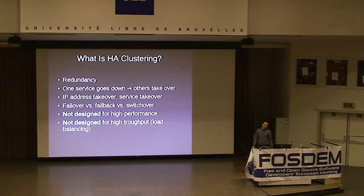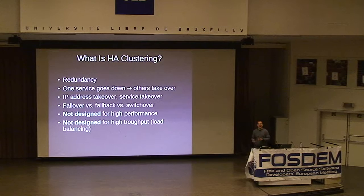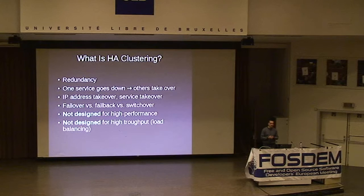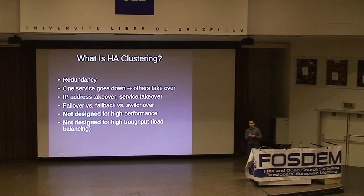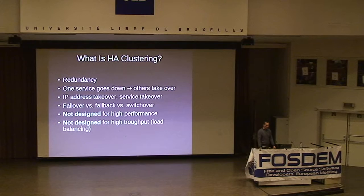We'll be talking about high availability clustering, which means providing redundant components so that if one component or service goes down, another can take over immediately — ensuring the user or application doesn't really notice what's happening in the background. The typical scenario is that you have multiple boxes configured so they can switch IP addresses quickly. A service pointing to the IP address of machine A can simply be redirected to machine B or C. It's also possible to take down an application on one machine and start it up on another, taking over the data that was just being accessed.